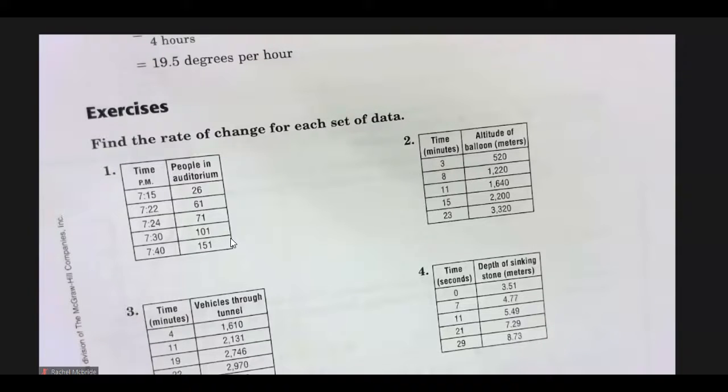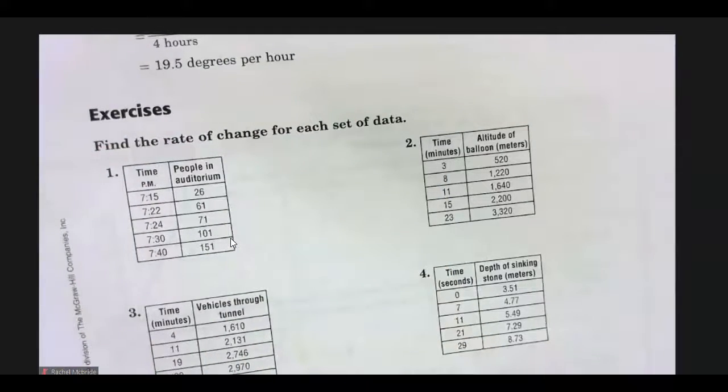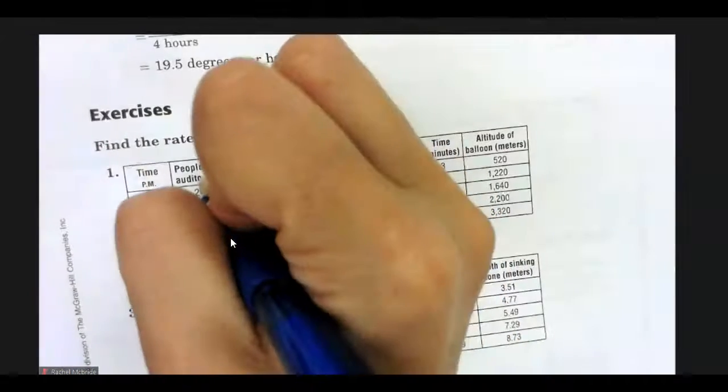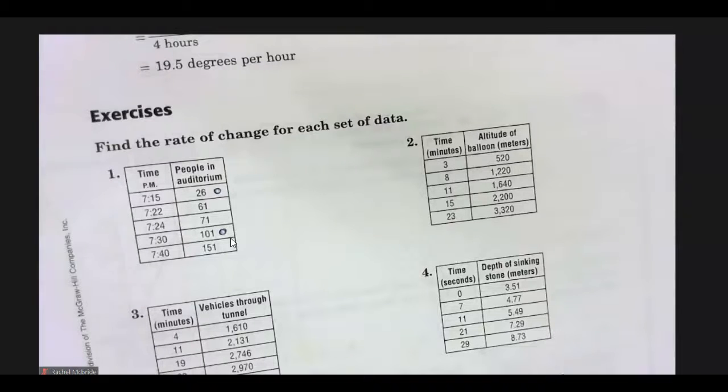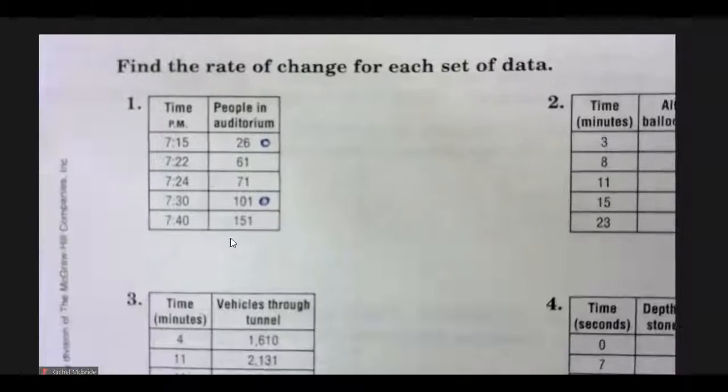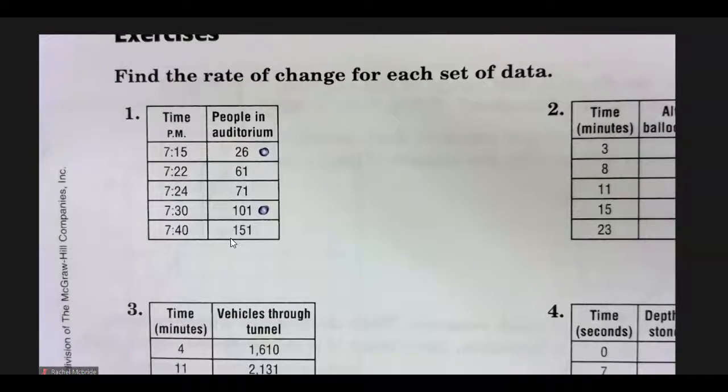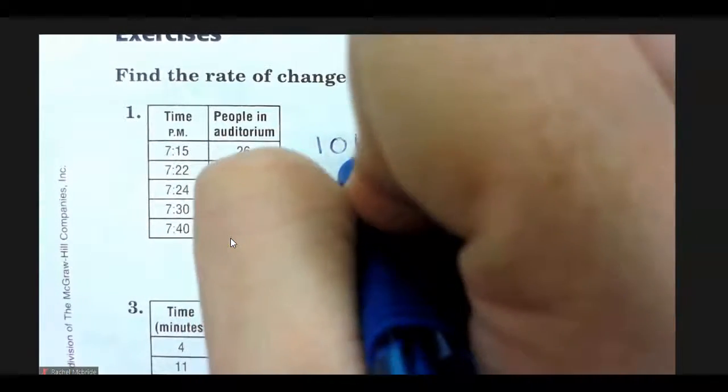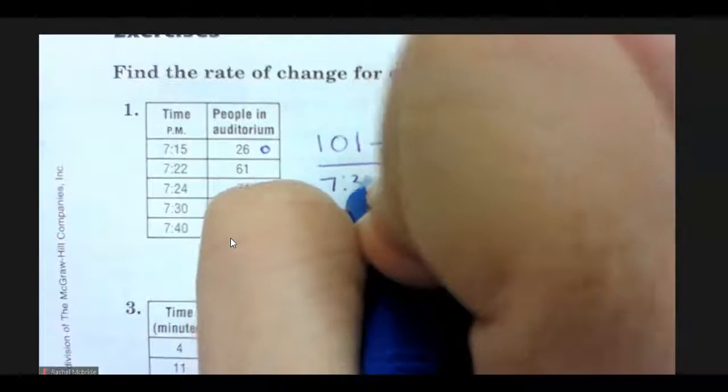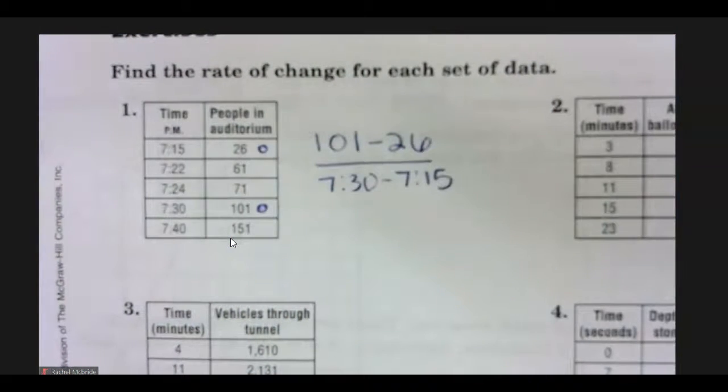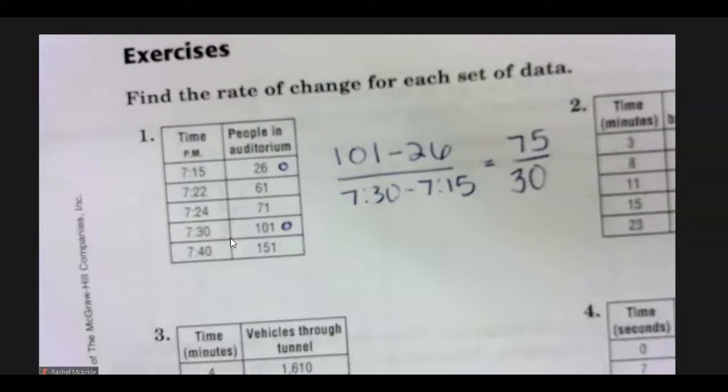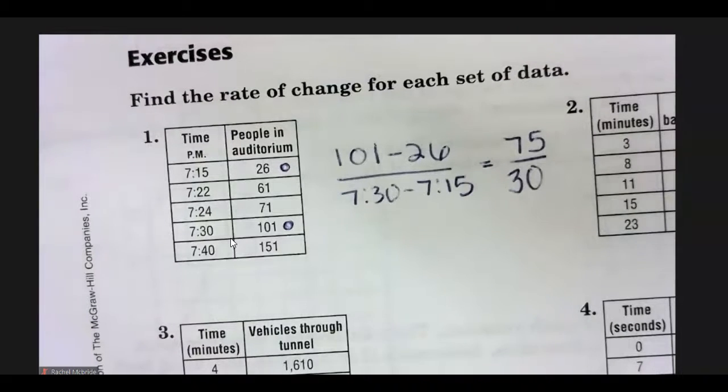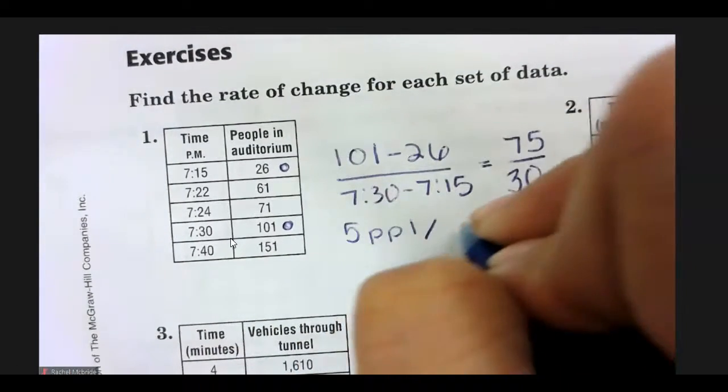It says find the rate of change for each set of data. So, you're going to pick any two points on that table. It doesn't matter what two you pick. So, maybe I pick this point and that point. And I picked them purposely just because there was a 15-minute time change from 7.15 to 7.30. So, I picked the one in which the change of time would be easiest to calculate. So, it would be 101 minus 26 over 7.30 minus 7.15. So, that's a change of 75 people in 30 minutes.